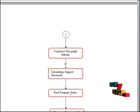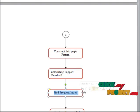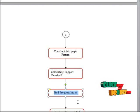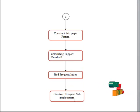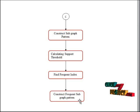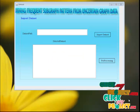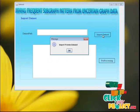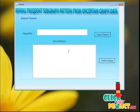After that, we are going to find the frequent index value. From that, we are going to construct a frequent subgraph pattern. Let me start the execution of the program. First, we are going to import the protein dataset.